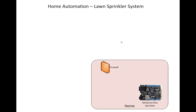So basically, within my home, behind my firewall, I have a Netduino Plus sprinkler that is hooked up to my internal network at home and connected to my sprinkler heads to turn on my watering system. I also have a Windows Phone 7 that I use to program the sprinkler as far as the times it should come on, as well as remotely control the sprinkler.